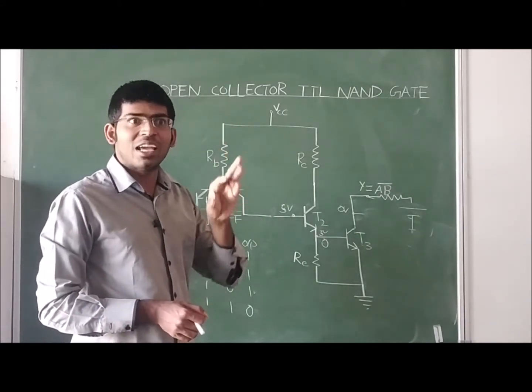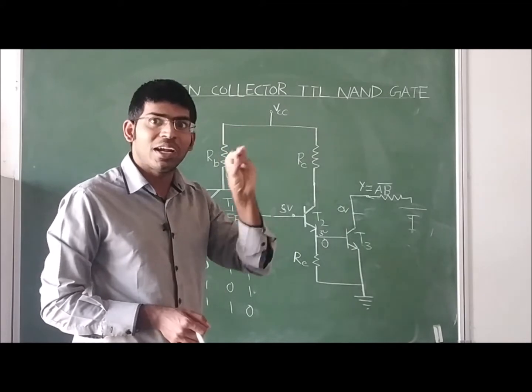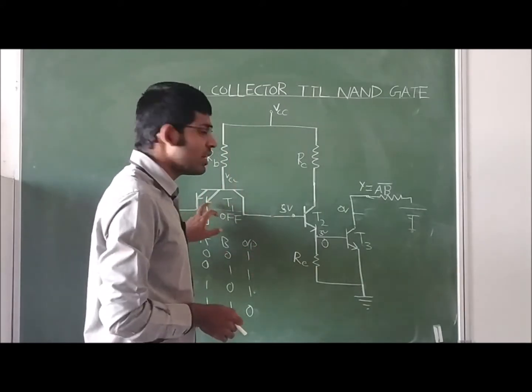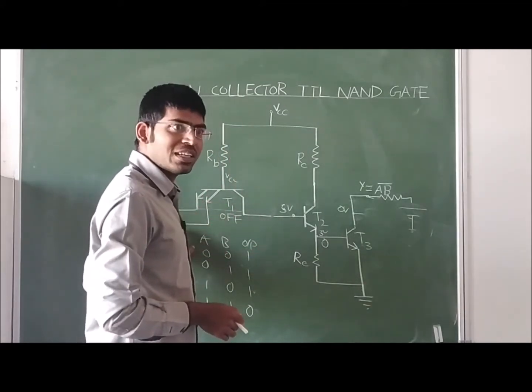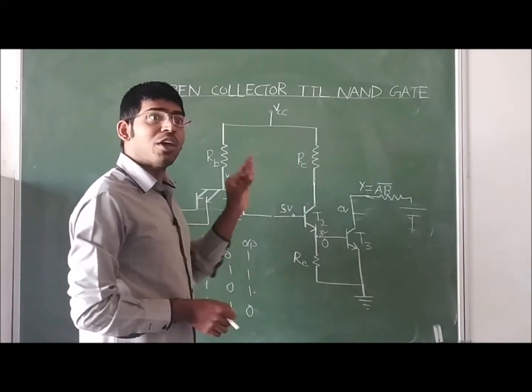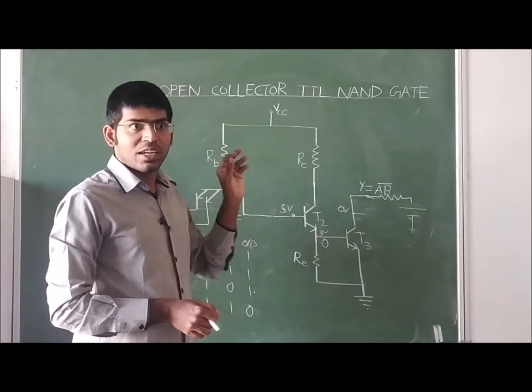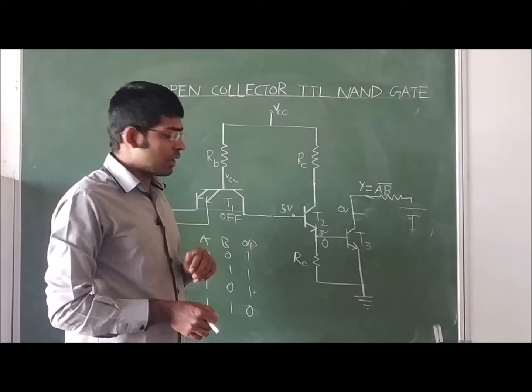If you want to design a five input NAND gate, how many emitters do we have to connect? We have to take T1 with five emitters.